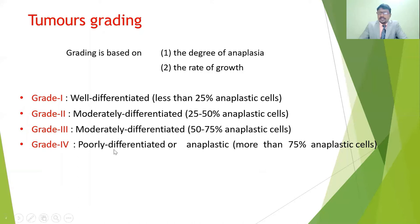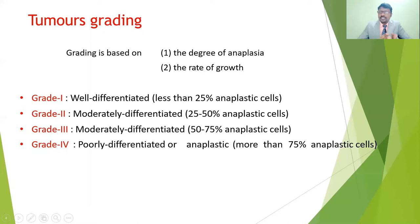Grade 4 represents the severe stage of cancer. Well-differentiated tumors show slow growth and low aggressiveness, while poorly differentiated tumors lead to severe complications, increasing symptoms, and fast cancer growth. Based on these grades, we can predict survival and how quickly the disease may progress.